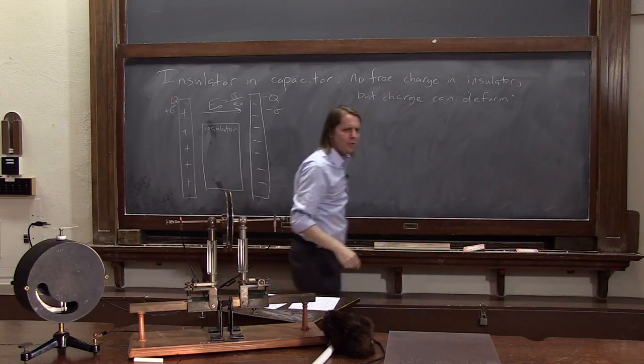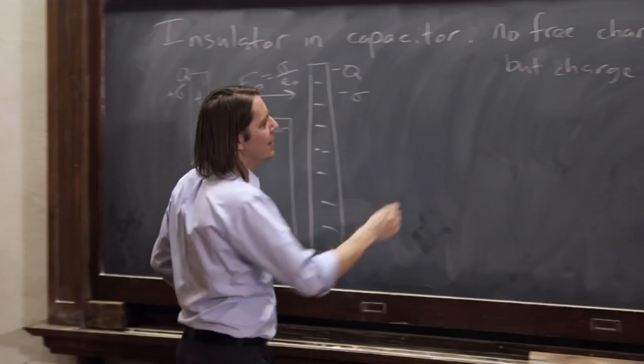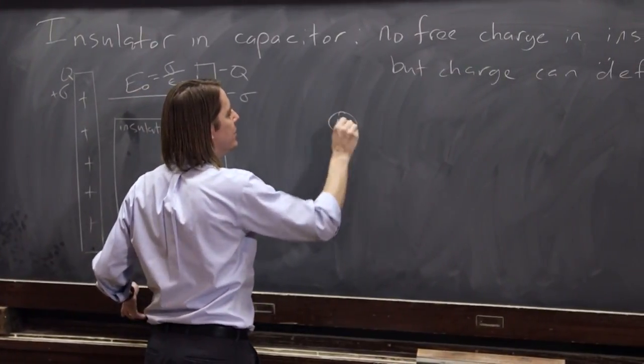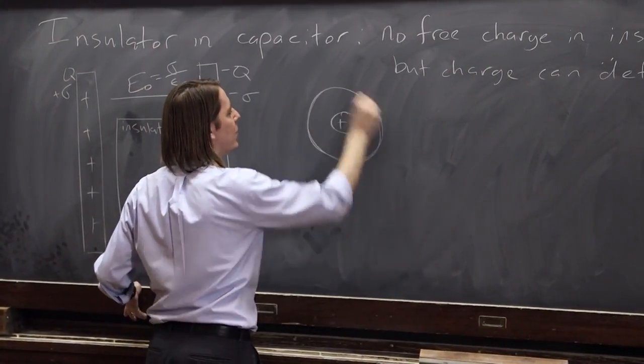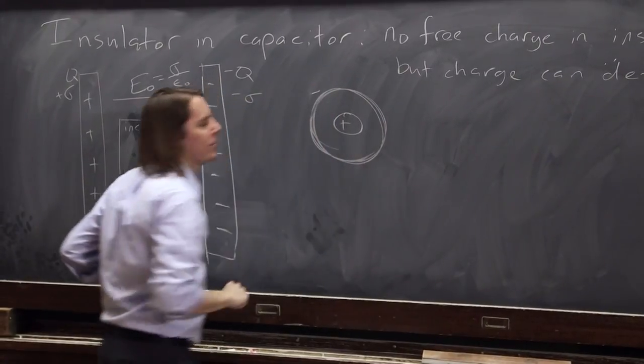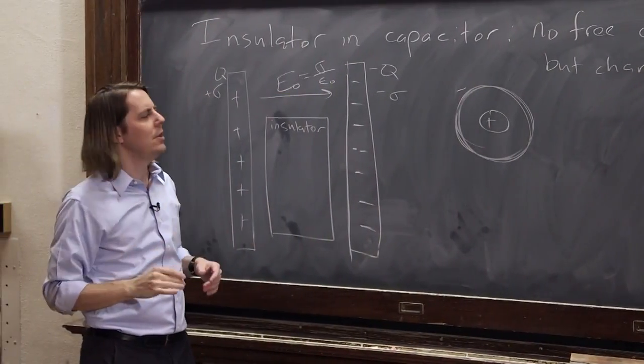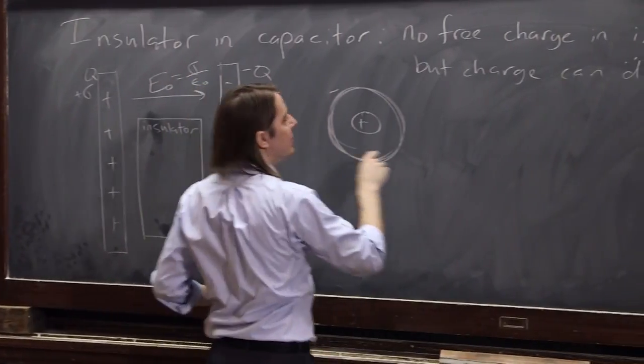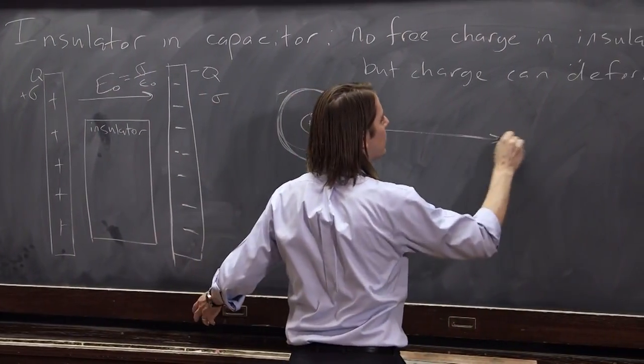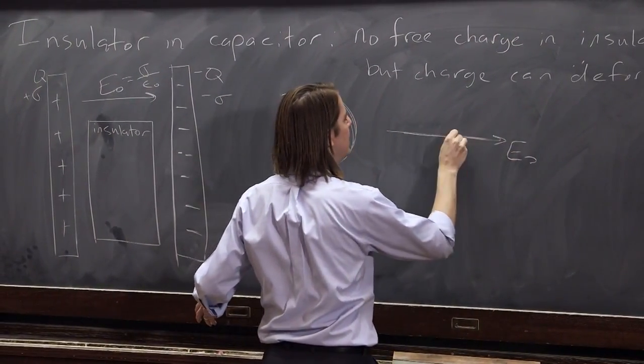So deform is a strange thing to say a charge can do. Let me show you what I mean. If you have an atom that's just a positive nucleus, and it's surrounded by a negative electron cloud, let's pretend it's beautifully symmetric, nice and round, and you apply this E naught to it, E naught gets there,